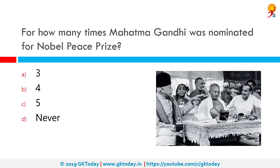For how many times was Mahatma Gandhi nominated for the Nobel Peace Prize? Correct answer is five times. Mahatma Gandhi was nominated for the Nobel Peace Prize five times between 1937 and 1948 but never received the prize, being assassinated on 30th January 1948 — two days before the closing date for the 1948 peace prize nominations.